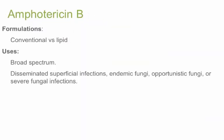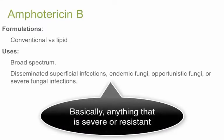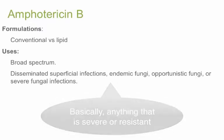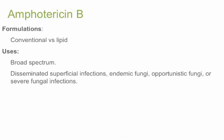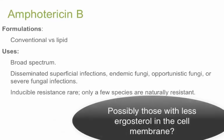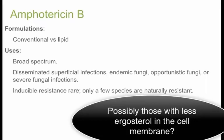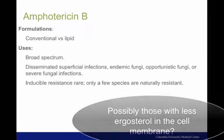With its broad-spectrum activity, Amphotericin B may be used in resistant, severe, or disseminated superficial infections, endemic fungal infections, or opportunistic fungal infections. Inducible resistance is very rare, but a very few species have inherent resistance.